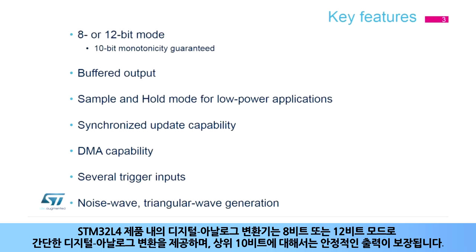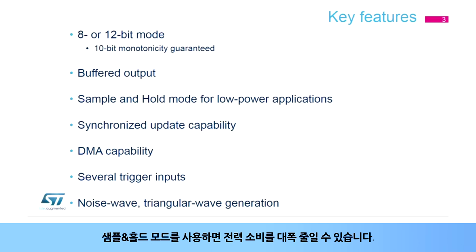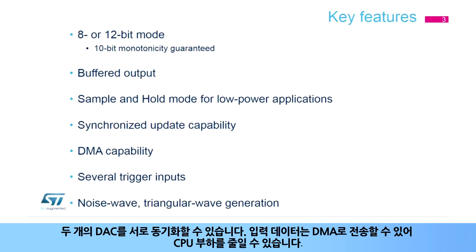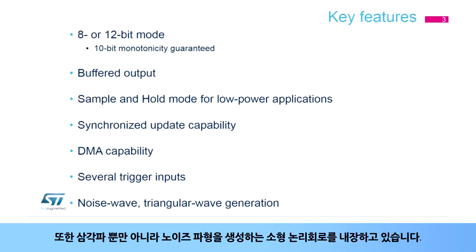The digital to analog converter inside STM32L4 products offers simple digital to analog conversion in an 8- or 12-bit mode. 10-bit monotonicity is guaranteed. The DAC output can have a low impedance buffer to drive external loads. Its sample and hold mode can reduce power consumption significantly. Two DACs can be synchronized with each other. The input data can be transferred by DMA, which offloads the CPU. The DAC output data can be updated by a timer, an external trigger, or a software trigger. It also integrates small logic to generate noise waves as well as triangle waves.